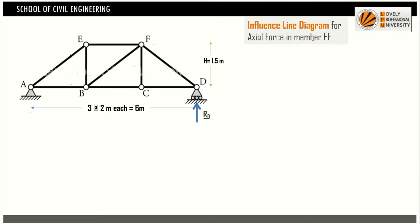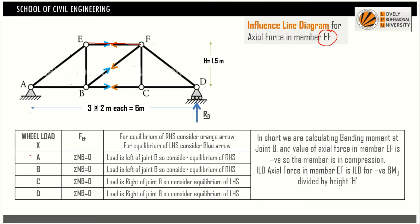Now we find the ILD for axial force in member EF. To find force in an intermediate member directly, we use the method of sections. We cut through three members — EF, BF, and BC — dividing the truss into two parts. When the truss is cut, the internal axial forces become visible. The unit load positions to consider are A, B, C, and P (panel points).